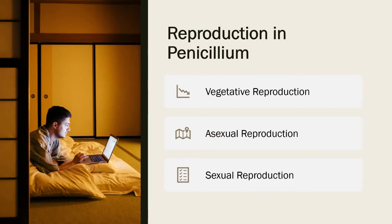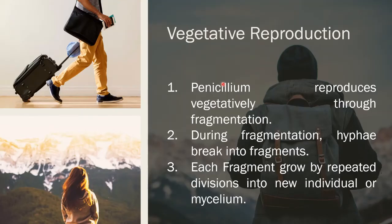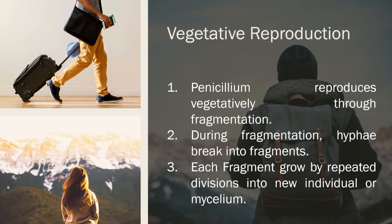Asexual reproduction — in Penicillium, a simple way to reproduce is vegetative reproduction through fragmentation. The mycelium breaks into fragments. Every fragment grows by repeated division into a new individual or new mycelium. Each fragment is divided mitotically, and as a result a new mycelium forms a new individual. This simple vegetative reproduction by fragmentation is also called asexual reproduction.